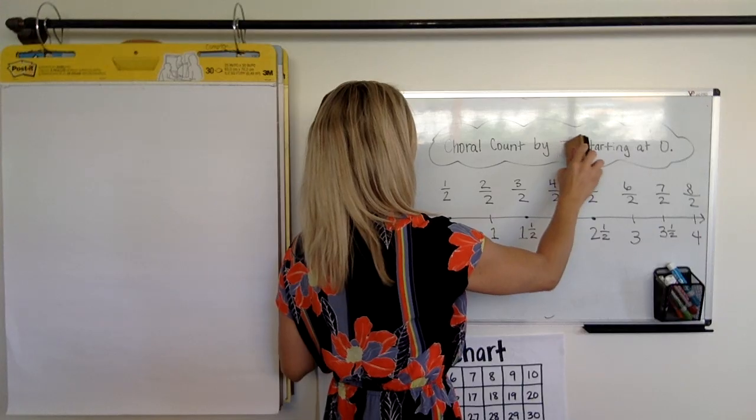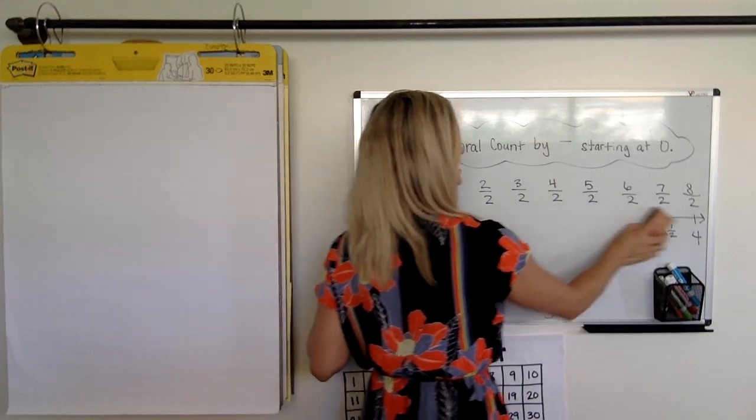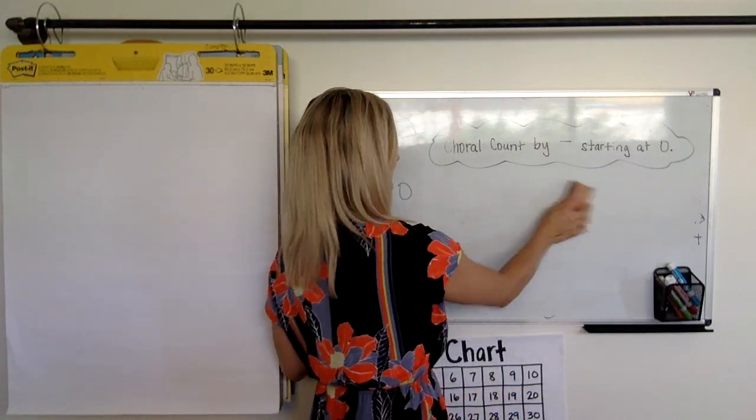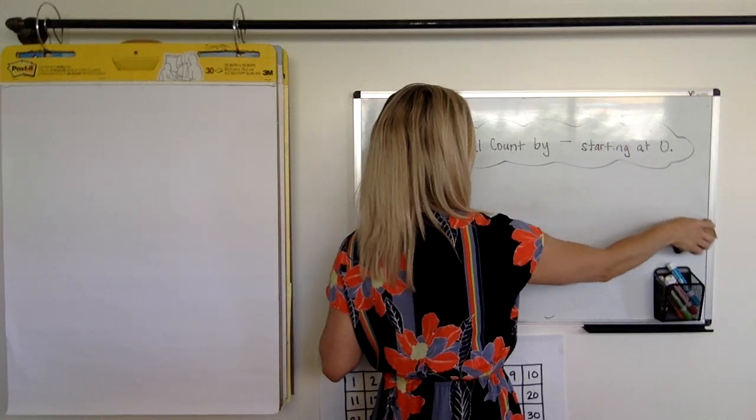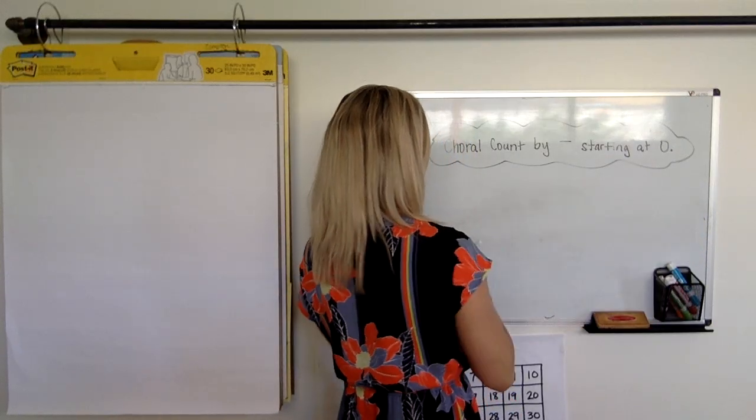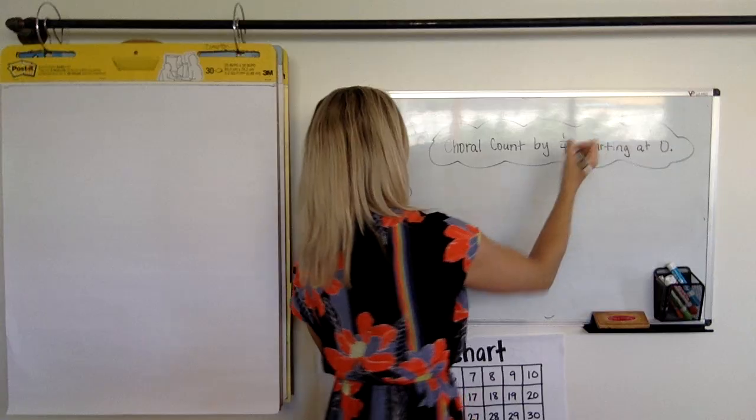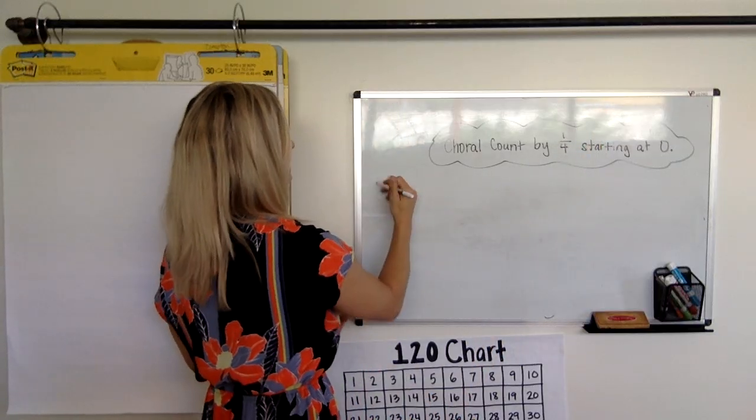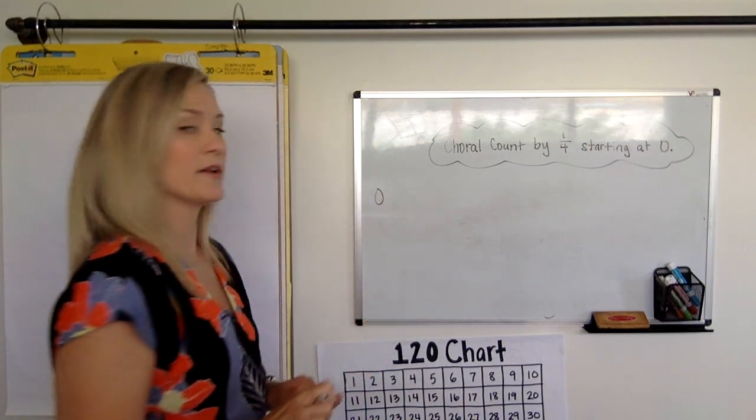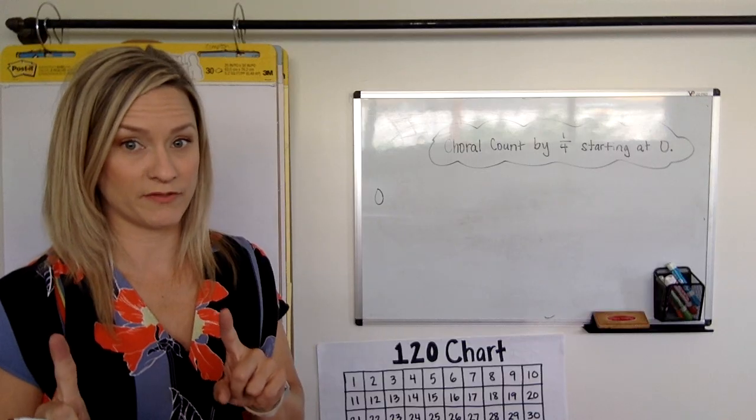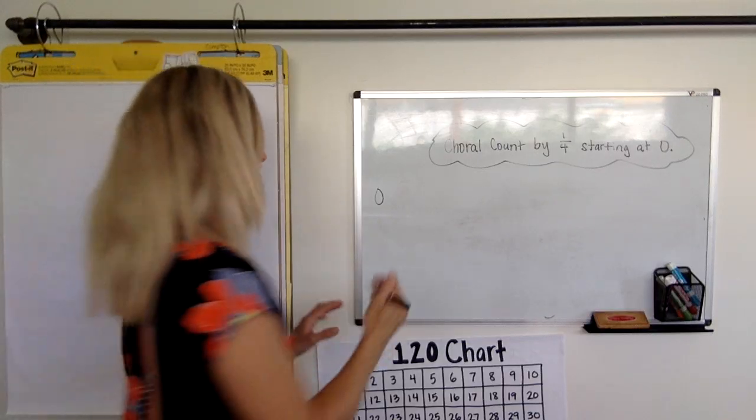So this time I'm going to say, oh, I think we'll still count by one fourths starting at zero. All right, let's do that. Here we go. I'm going to move my zero over, have a little more room. All right, ready? You have to count with me, don't forget. Ready? Count.